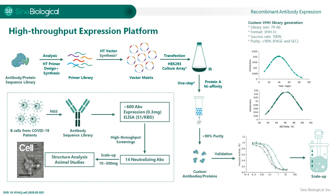Last but not least, we also have a so-called high-throughput expression platform. This platform is suitable to produce IgG-type antibodies, as well as VHH fusion proteins and some other proteins. Once we obtain an antibody or protein sequence library, we use a high-throughput primer design and synthesis system to acquire a primer library, which is converted into expression vectors. We then use an array of shaker flasks containing HEK-293 cells to produce these antibodies or proteins, followed by one-step purification. We then perform characterizations and decide which candidates to scale up.